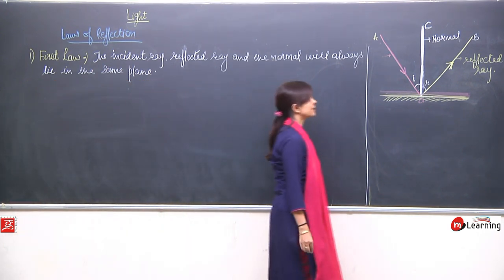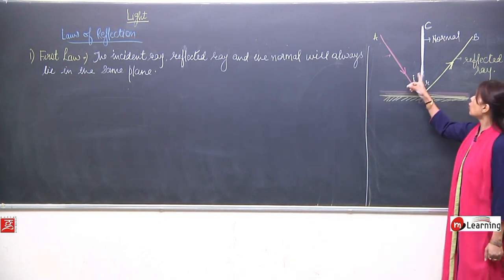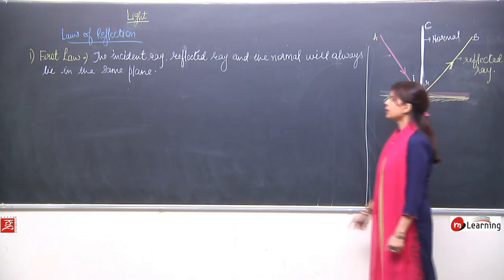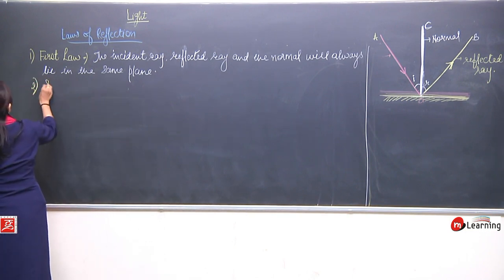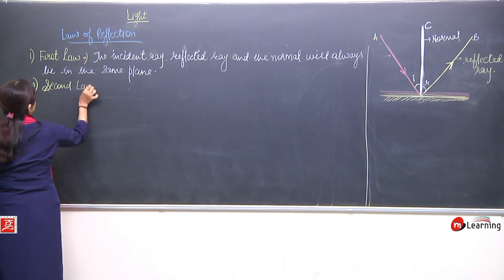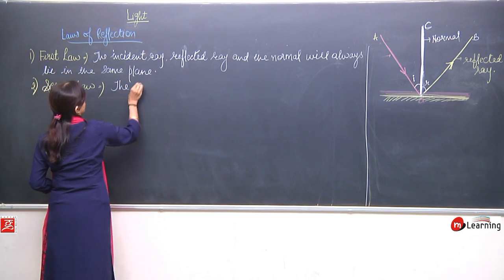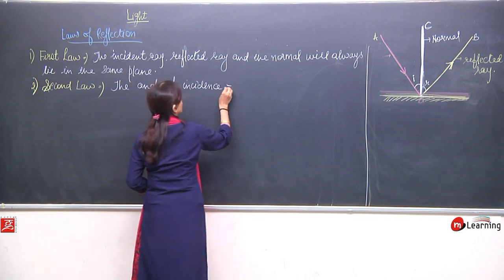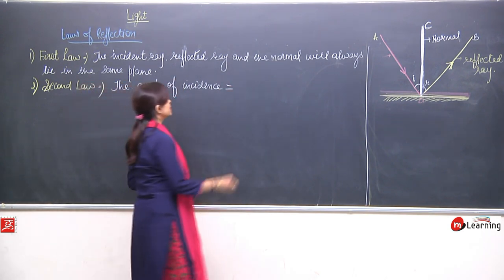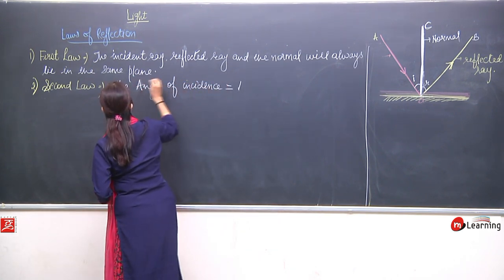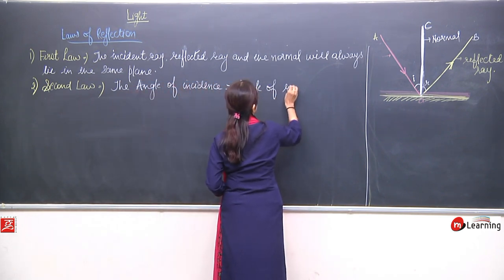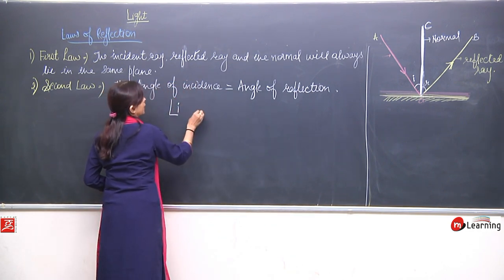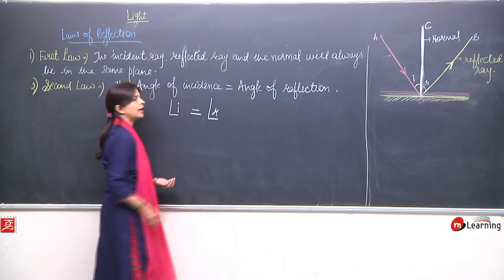The second law says that the angle of incidence is always equal to the angle of reflection. That means angle of incidence (i) is always equal to the angle of reflection (r), which can be written as i = r.